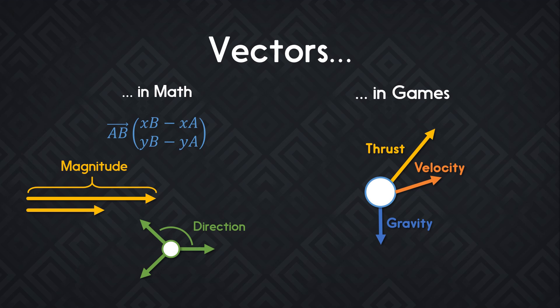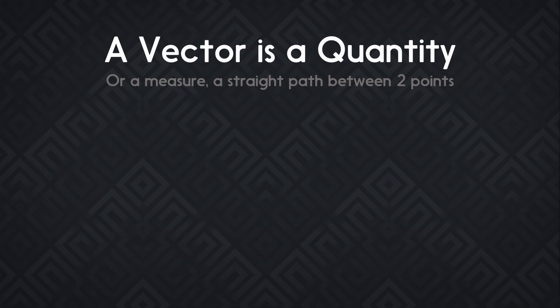The biggest difference is that on the computer, vectors are just a set of values and you can store whatever you want in them, including colors, to give you an example. But let's talk about vectors in math. A vector is a quantity, that's a mathematical term for a number or, in that case, a measure.